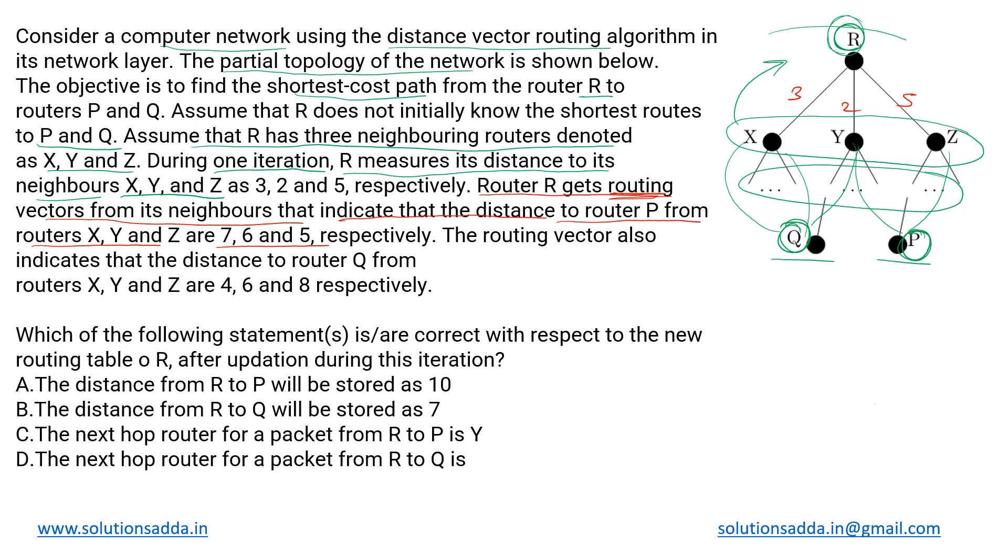So now let us draw the topology in this way. We have X, Y and Z and then in some way they are connected to P and Q but we are not actually concerned. We can assume that they are directly connected. This is how the topology would look like and what are the distances given? These are three, two and five.